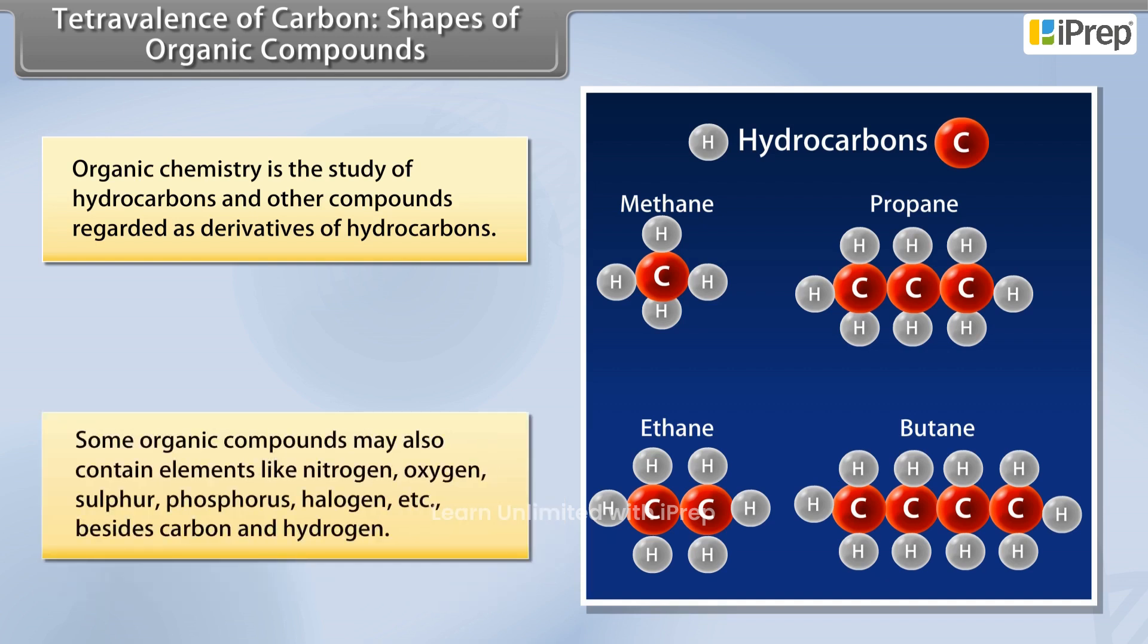Some organic compounds may also contain elements like nitrogen, oxygen, sulfur, phosphorus, halogen, etc., besides carbon and hydrogen.